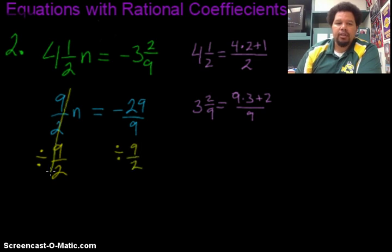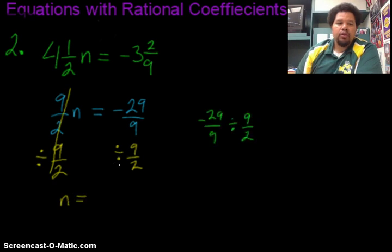This division gives me my n by itself. So this problem over here on the right, I rewrite it in the horizontal way, so sideways. And when I see this, I'm dividing by a fraction, which means I am going to multiply by the reciprocal.